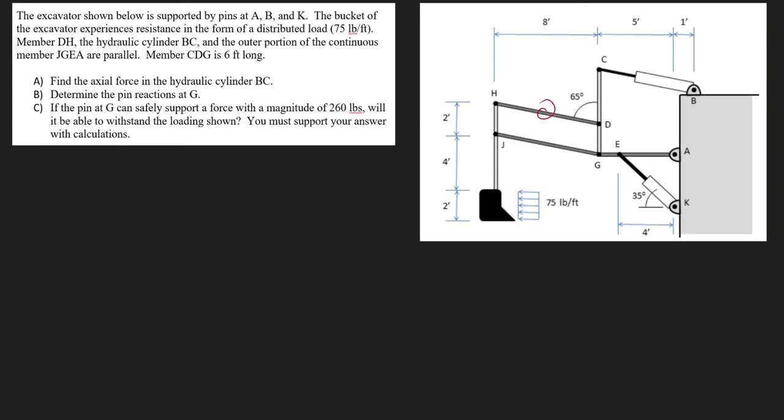The bucket of the excavator experiences a resistance in the form of a distributed load. There's that resistance of the dirt we're trying to pick up. Member DH, the hydraulic cylinder BC, and the outer portion of the continuous member JGEA are in parallel.